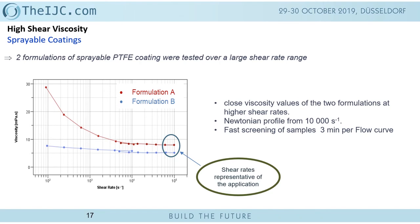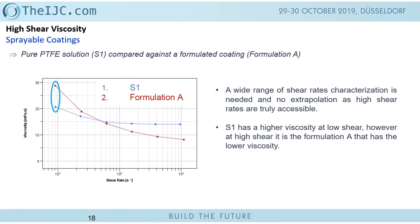They also sent another formulation — the same solution as A but with some additives — which we call S1. At lower shear rates, S1 showed lower viscosity than formulation A, but passing a certain shear rate, the behavior inverted: S1 showed higher viscosity than formulation A. This is exactly why I want to point out the importance of exploring shear rates that correspond to the application conditions, and also the importance of temperature.